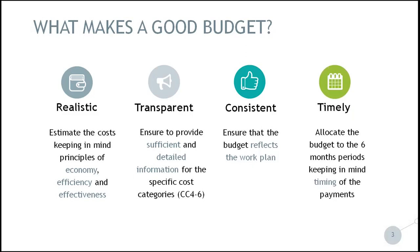Finally, the project budget should be timely. In view of the allocation of budget to reporting periods, the following elements are to be taken into consideration. First, the reporting periods run on a six-monthly basis from the project start date. Second, the budget allocated to each reporting period should be an estimation of the actual payments to be made in the respective reporting period. Therefore, the budget only partly reflects the activities taking place in a certain period. If an activity is carried out close to the end of the reporting period, the related payment may take place in the following period and the costs should be budgeted only in the following reporting period. Our tip: partners should not expect to spend too much in the first reporting period, because from our experience, not many payments are made during the startup phase.